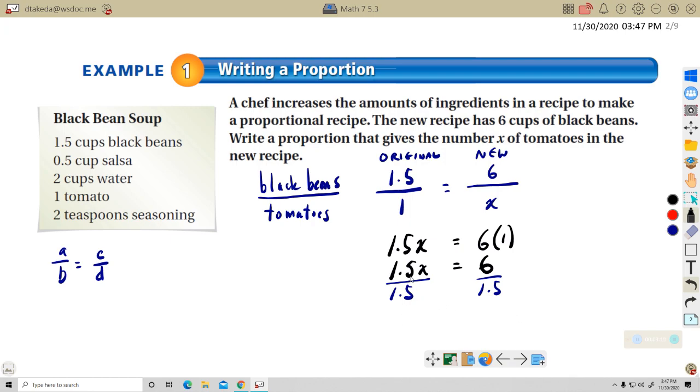Okay. So 1.5 divided by 1.5 is just a one. So that leaves X. Six divided by 1.5, that's four. That's four. So the answer is four tomatoes. Okay. So this is using cross products. And I think it's really important to write out your relationship first, so you know where to put your numbers as you're filling them in.